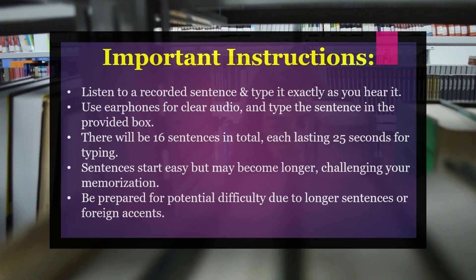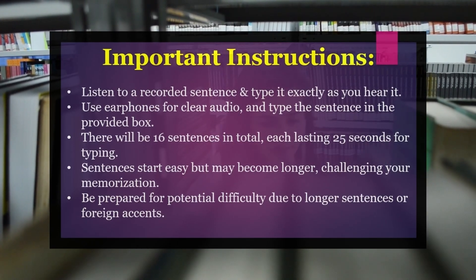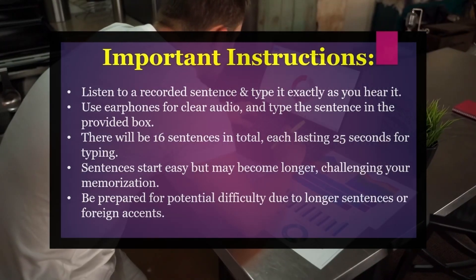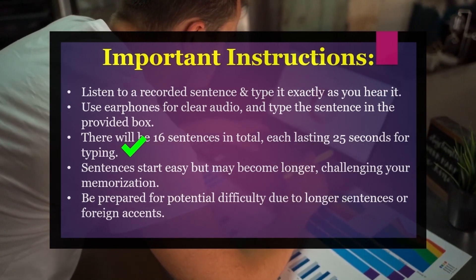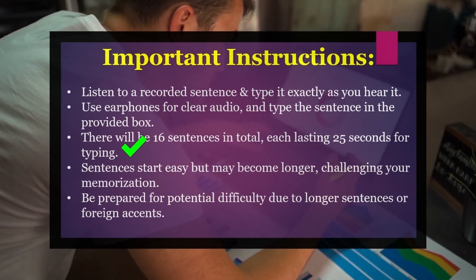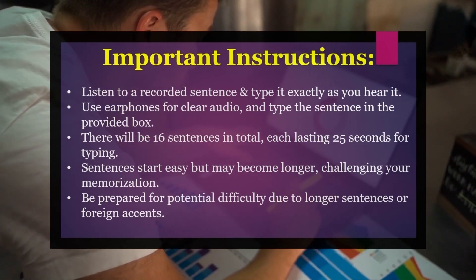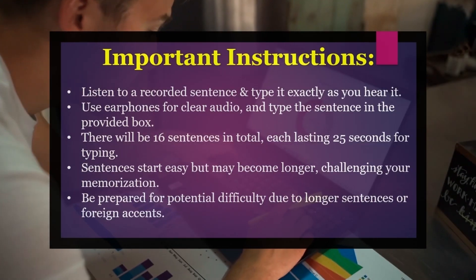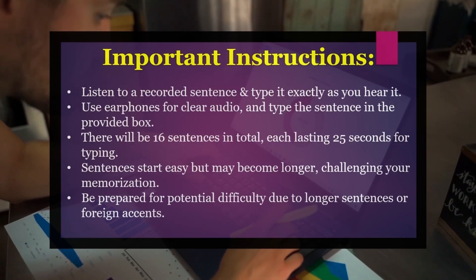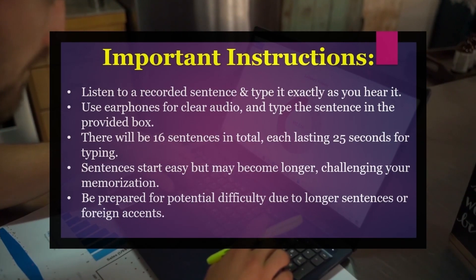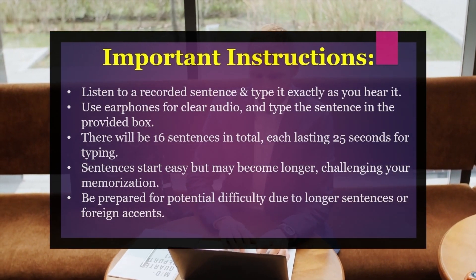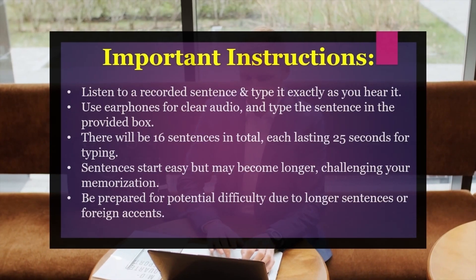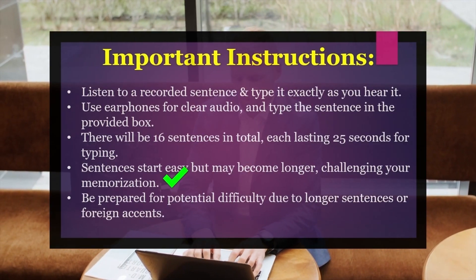For example, a machine would say 'Leave town on the next train,' and you must type the same sentence in the given box. There will be a total of 16 sentences one after the other, and you will get 25 seconds to type each sentence. Another example: 'A certified swimming instructor is with the students at all times.' The first two or three sentences will be short and easy and you won't have any issues typing them.